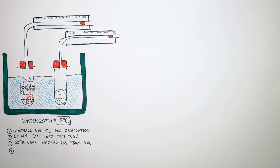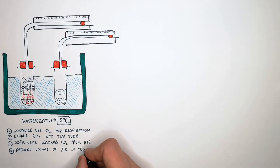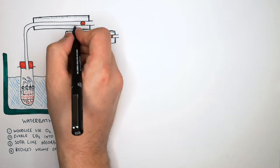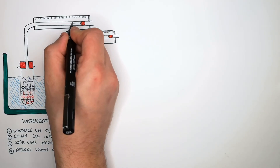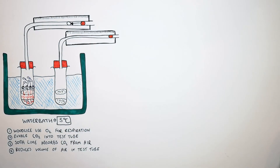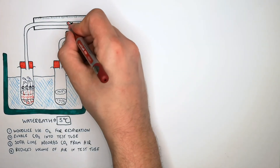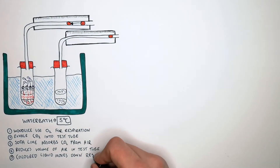Because the wood lice have inhaled oxygen and exhaled CO2, but the CO2 has been absorbed by the soda lime, this reduces the volume of air inside the test tube. The O2 has been absorbed by the wood lice and the CO2 they exhaled has been absorbed by the soda lime, causing the volume of air inside the test tube to decrease. This forces the coloured liquid in the respirometer to move along it towards the respiring organisms, due to a change in pressure.